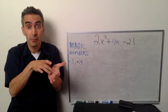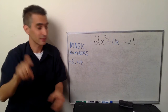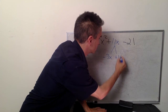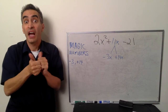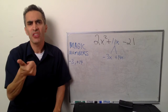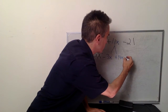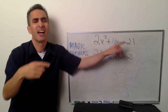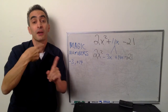Now, what are we going to do with the magic numbers? Notice the middle term, 11x. The 11x becomes negative 3x plus 14x. We're going to take negative 3x plus 14x, which equals 11x. The other terms — 2x squared and negative 21 — we're not going to change.